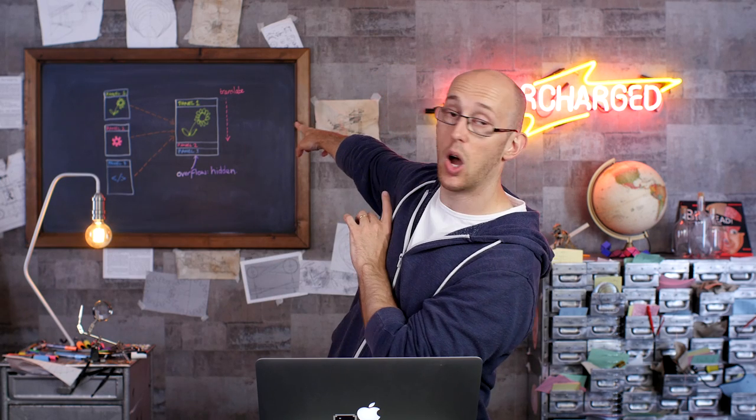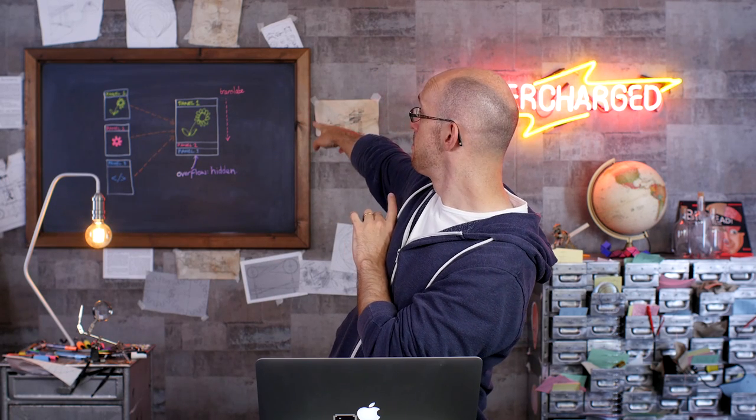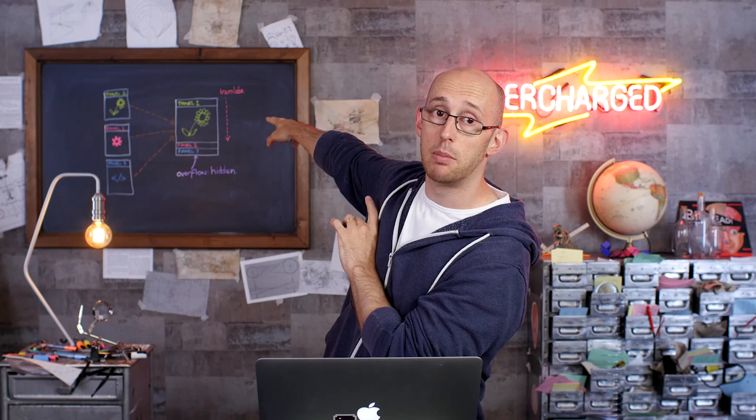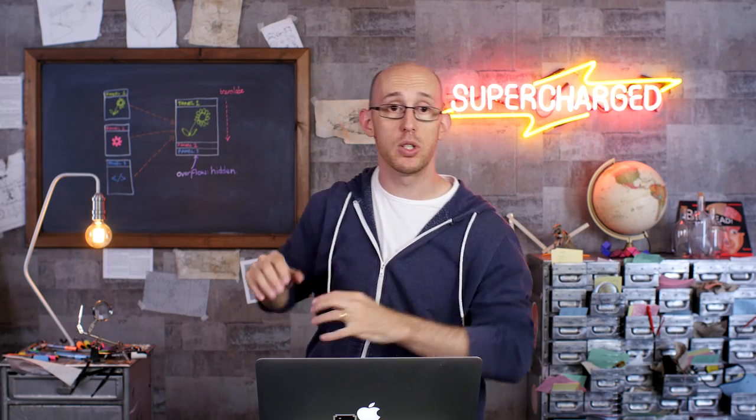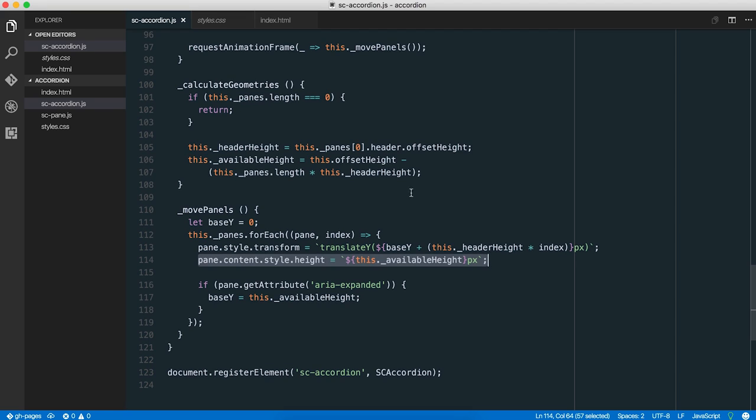When we move the panels around and we set up everything, what we want to do is we want to make sure that we set the pane content height to be that available height. So you can see over there, the flower. That's the available height. That's where that bit is. So we want to make sure that all our panes have that available height. Perfect. When we see a pane that has the area expanded attribute, then we jump down because that's the expanded pane. So we need to make sure that all the other content stacks up below it.